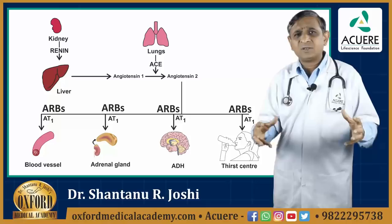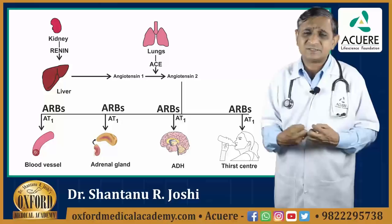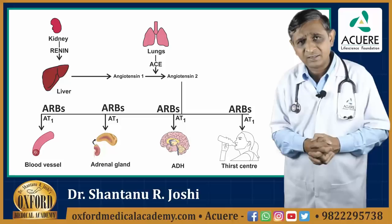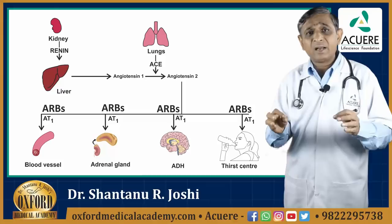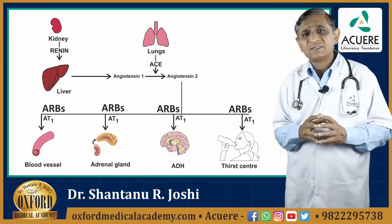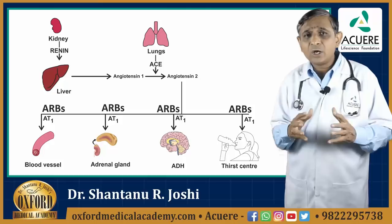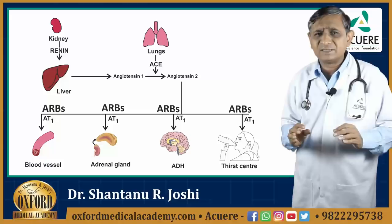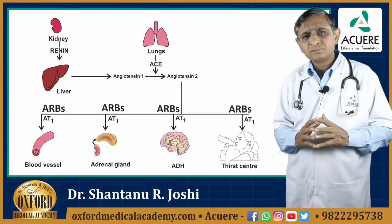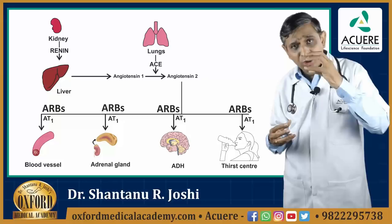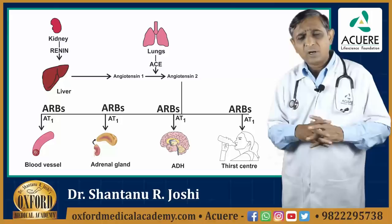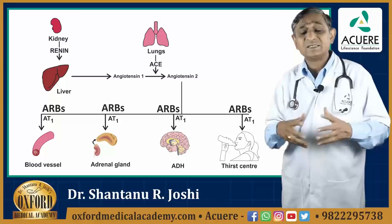Angiotensin-2 acting on the blood vessels produces vasoconstriction and a rise in TPR, ultimately raising both systolic and diastolic blood pressure. The same angiotensin-2 also acts on the adrenal cortex, causing it to secrete aldosterone. Aldosterone is principally a mineralocorticoid and, being a mineralocorticoid, it promotes retention of sodium and water, causing blood volume to rise, cardiac output to increase, and systolic blood pressure to rise.